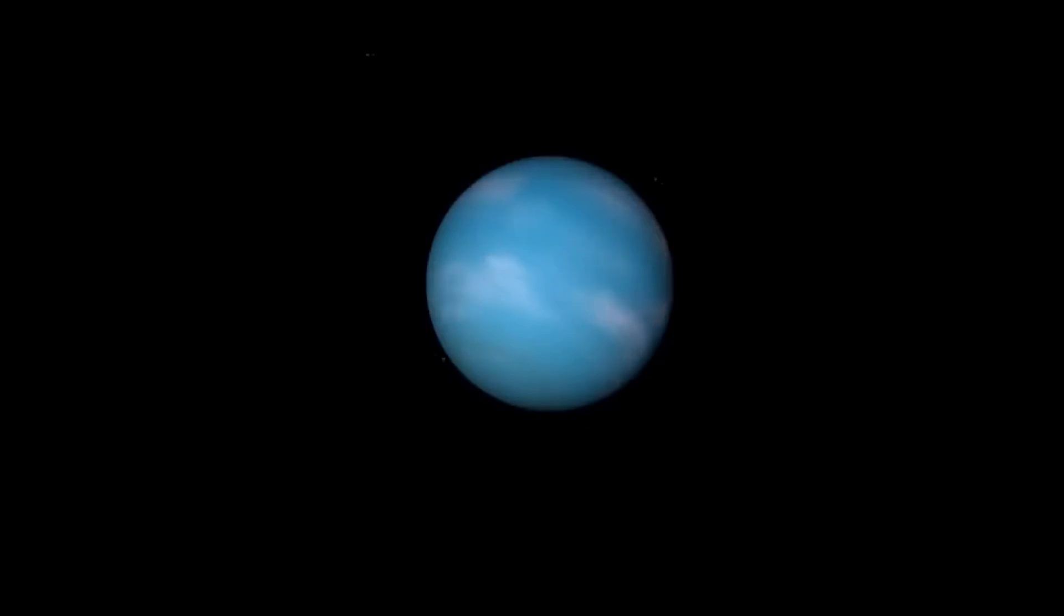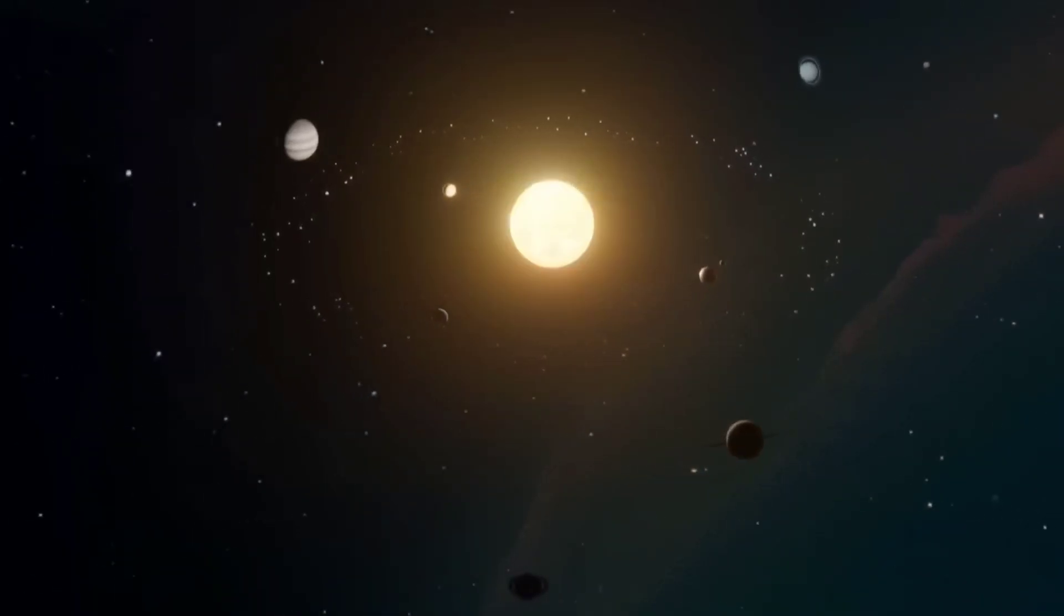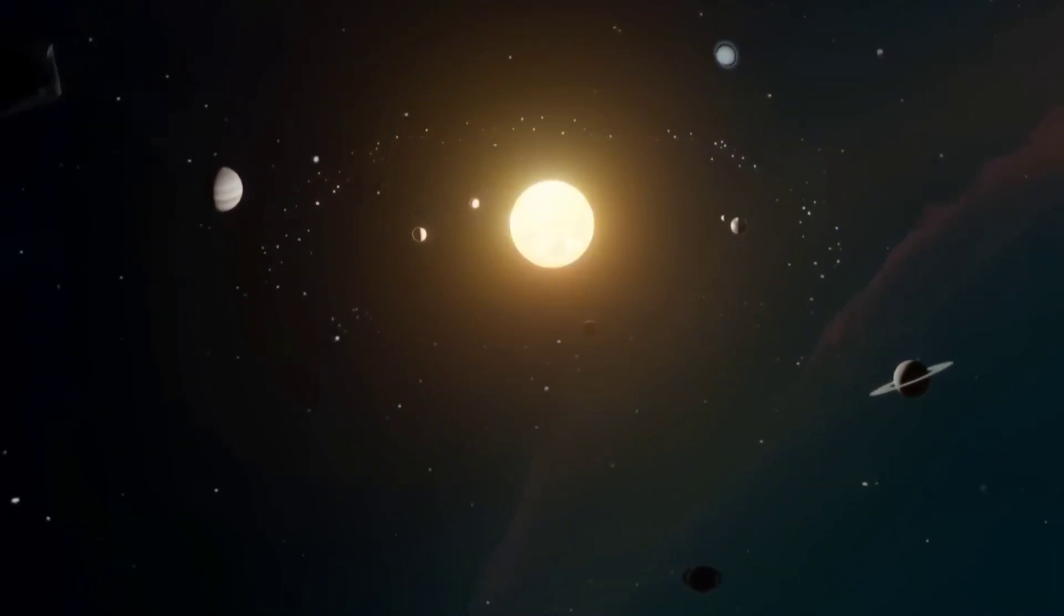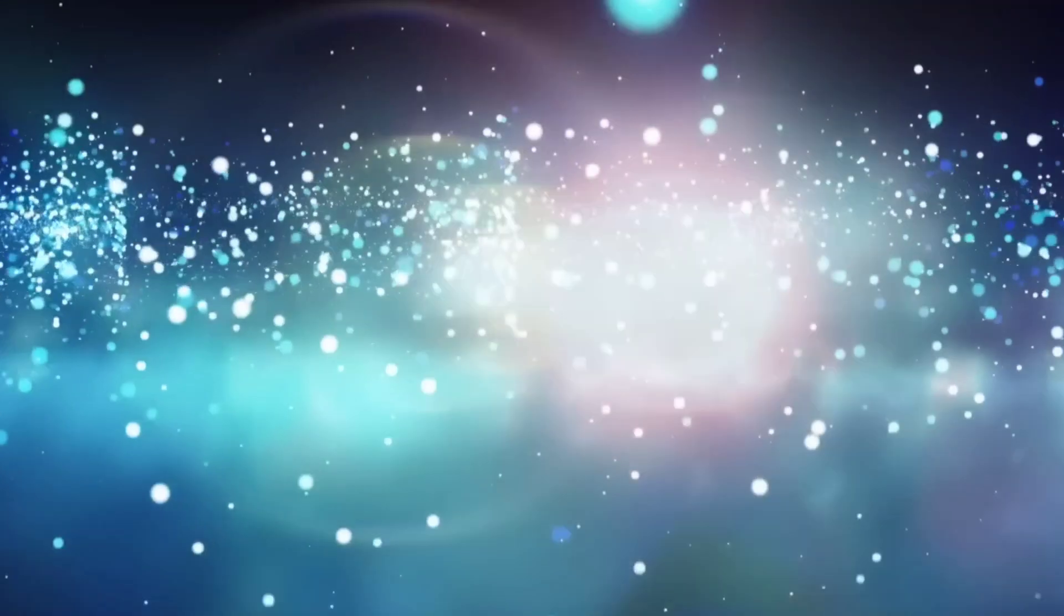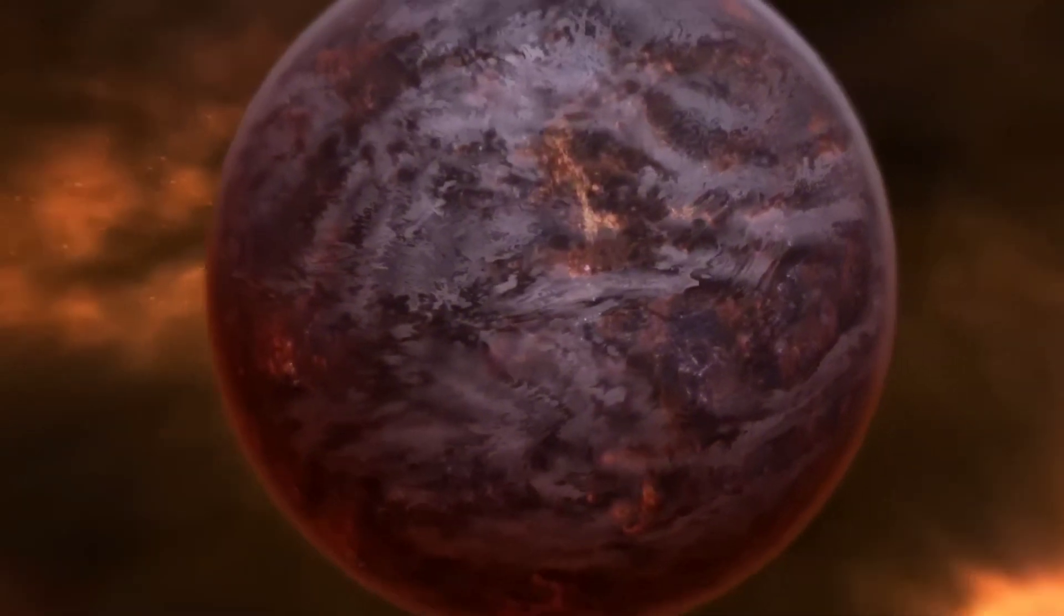Betelgeuse is classified as a red supergiant star. Despite being extremely large and bright, these types of stars can be relatively cool compared to other stars. Betelgeuse's surface temperature is about 3,600 Kelvin, which is cooler than the sun.